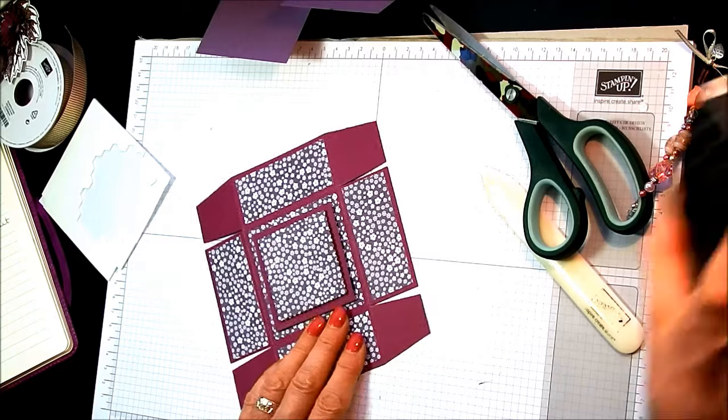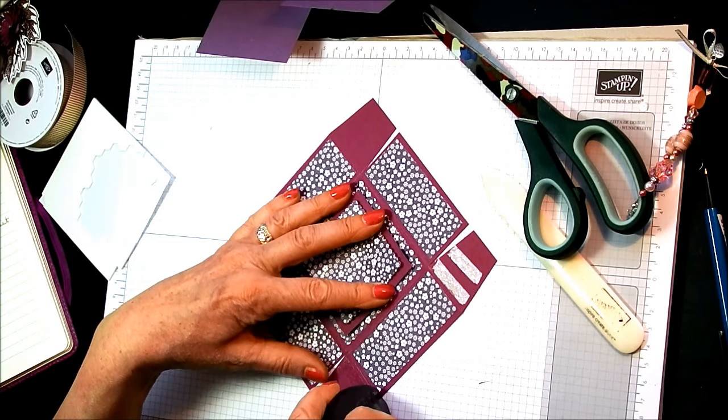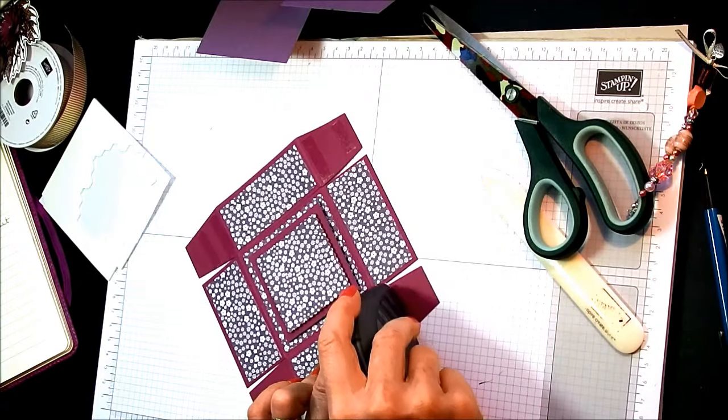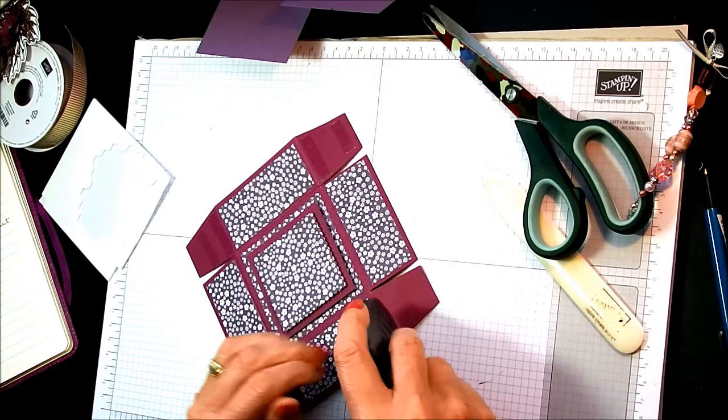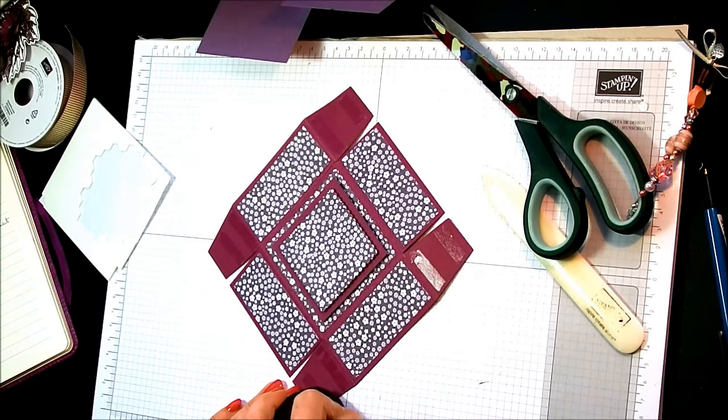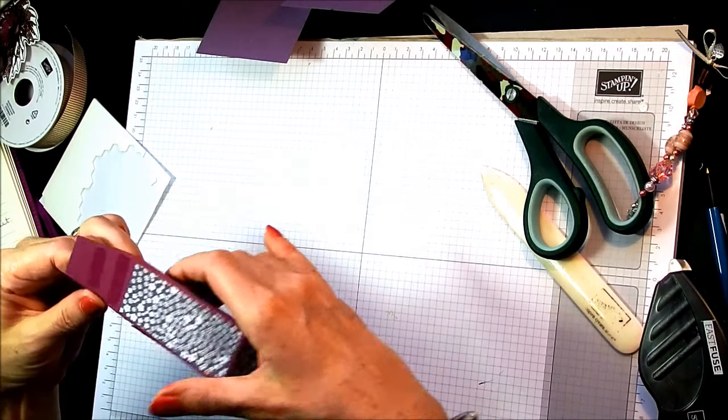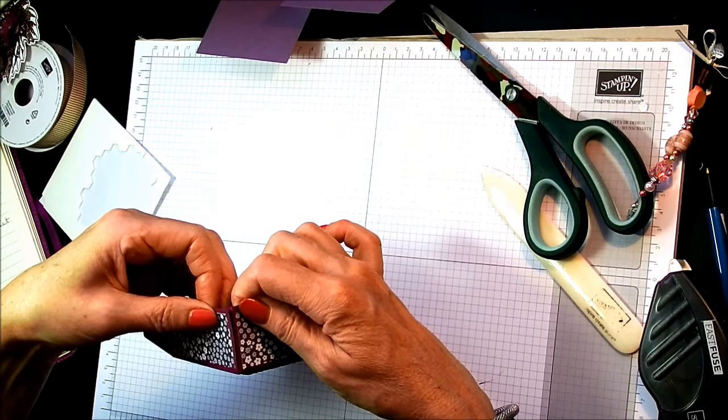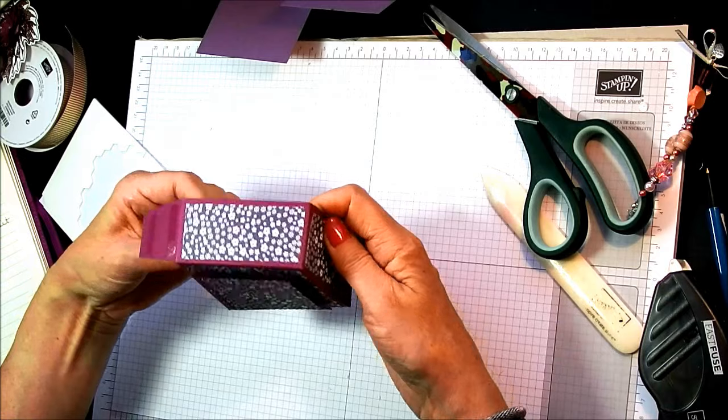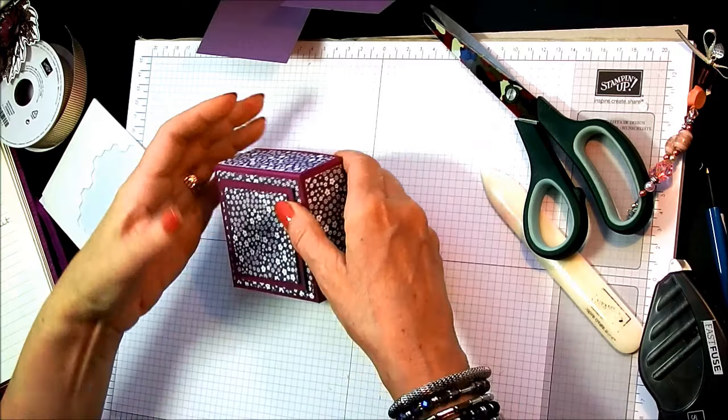And now I'm going to use some fast fuse to put my box lid together on all four corners. I'm going to stick it up in the usual way. That's it. That looks nice.